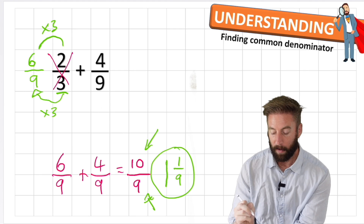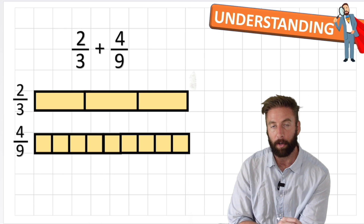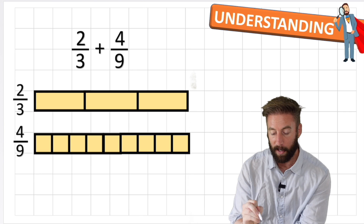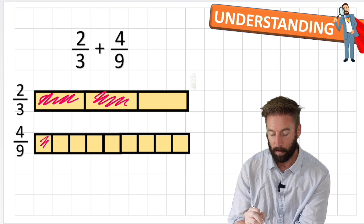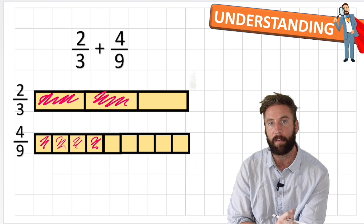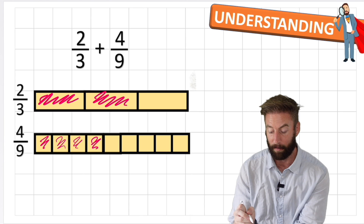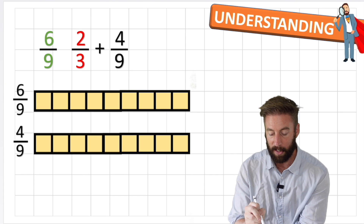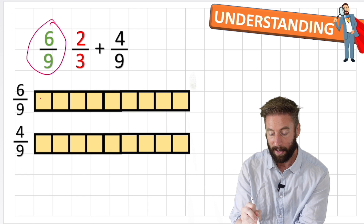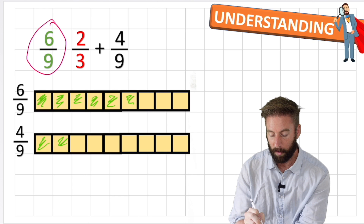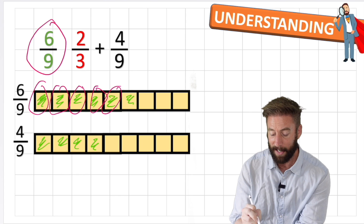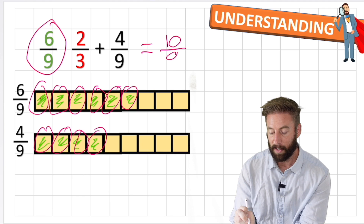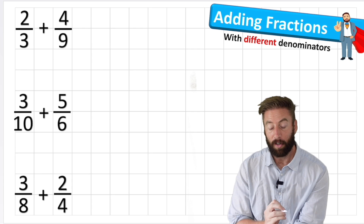Let's see this in our bar model. Originally 2 thirds plus 4 ninths - this is hard to add because I'm working with different sized pieces: thirds and ninths. It's very hard to add a third to a ninth. So we found an equivalent fraction: 6 ninths. Now it's much easier - we're adding the same quantity, ninths, every time. 1, 2, 3, 4, 5, 6 plus 1, 2, 3, 4 leaving a total of 1, 2, 3, 4, 5, 6, 7, 8, 9, 10 - that's 10 ninths or 1 and 1 ninth.